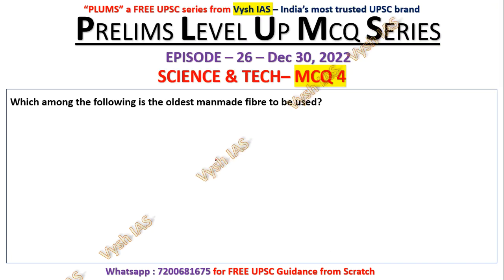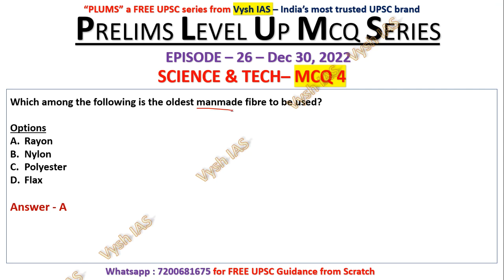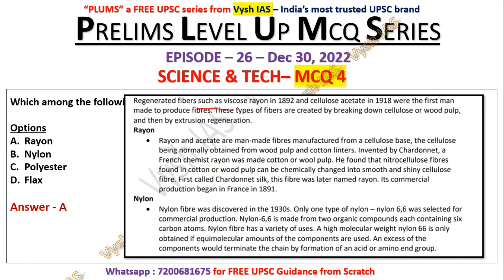Question number four: which of the following is the oldest man-made fiber to be used? Options are rayon, nylon, polyester, and flax. This is again from the same article on fibers. The answer is A — rayon. Regenerated fibers such as viscose rayon in 1892 and cellulose acetate in 1918 were the first man-made fibers, created by breaking down cellulose or wood pulp through extrusion and regeneration.